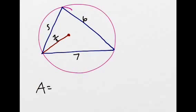So let's apply this. We know that area is equal to ABC divided by 4R.